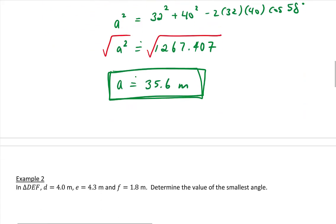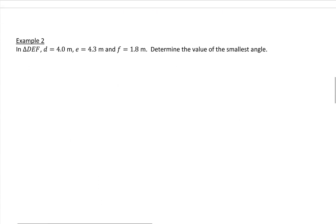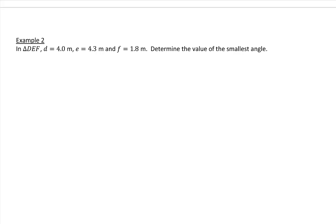Let's look at our next example. Example 2. Again, we have a triangle. This time it's D, E, and F. We know that side d, which is opposite angle D, is 4.0 meters. We know that side e, opposite angle E, is 4.3 meters. And side f is equal to 1.8 meters. Determine the value of the smallest angle.